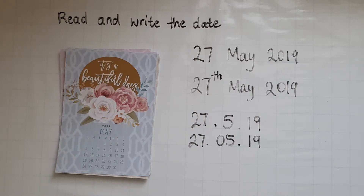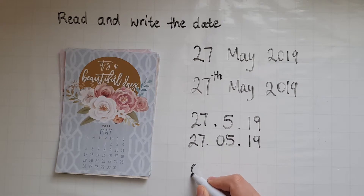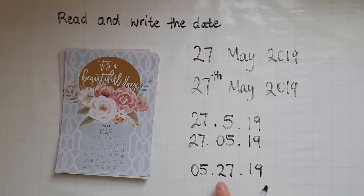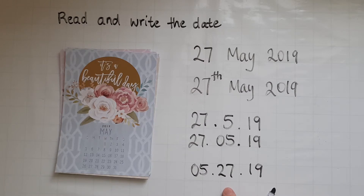One thing to be aware of is that on some computers or laptops you will see today's date written differently, because in the American format you write the month first. You can clearly see that we don't have 27 months, so it is clear for today's date, but with some other dates that would be confusing. It is really worth checking which format your computer uses and maybe changing it to the British format.